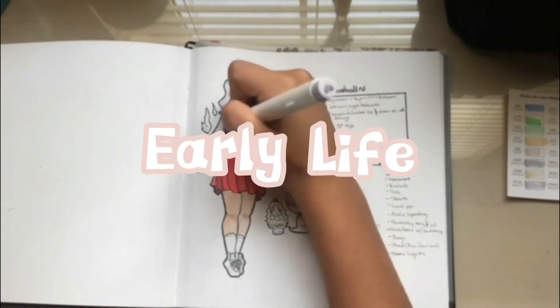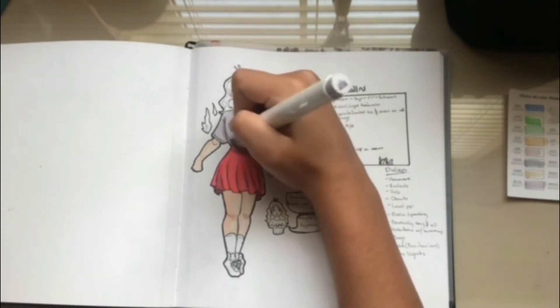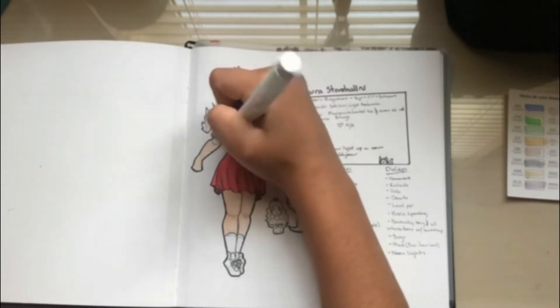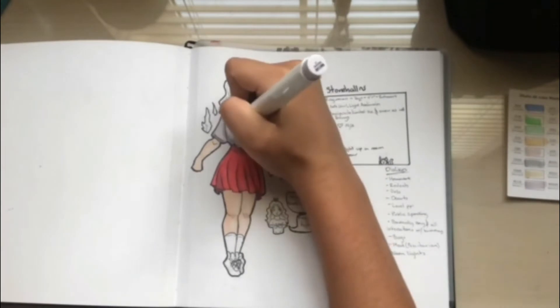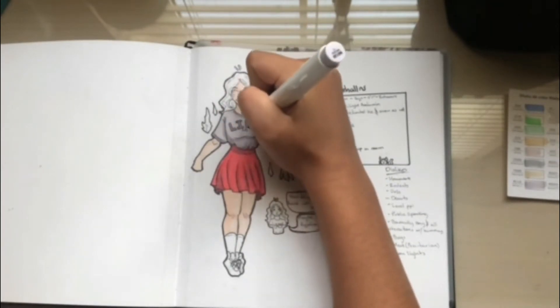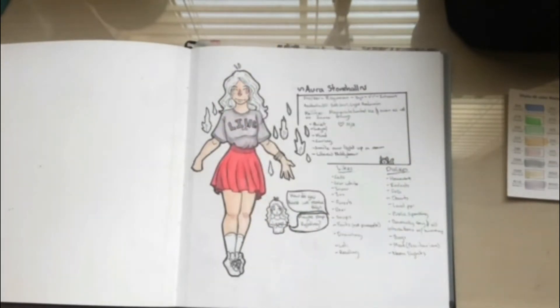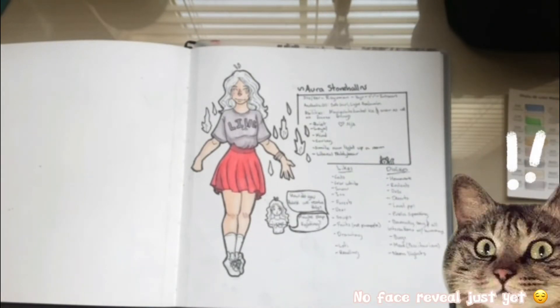Anyways, early life. Sorry if this sounds robotic because I'm reading this off of a character sheet that I've made for all of my OCs, kind of telling information about them. Anyways, early life. So, Aura lived most of her life in Ryum with her father. She never really got to know her mother before she was called to help Queen Eva in her rampage.